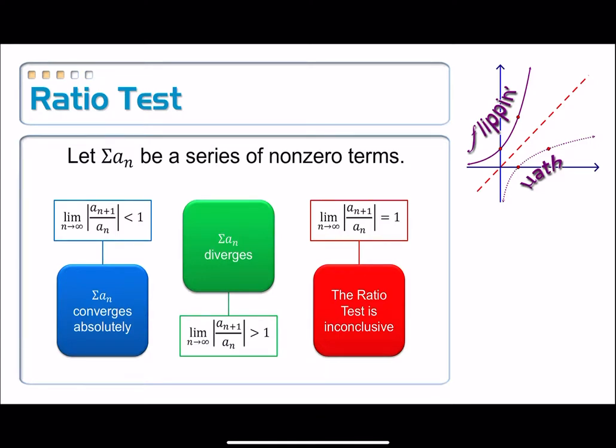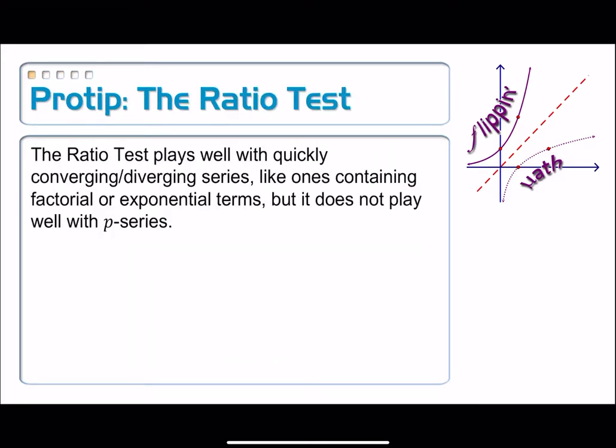As we're about to see right here in this pro tip. Make sure you write something down for this ratio test. I'm going to give you a pro tip here: When should I use the ratio test? I should use the ratio test whenever I'm working with series that have things like exponentials in it, things that have factorials, stuff that converges or diverges really quickly. It doesn't work well with p-series as we're about to see. But that's okay because we already have a test for p-series. It's really easy to use.